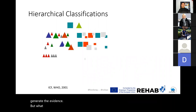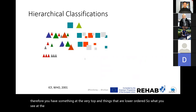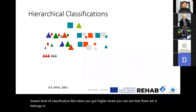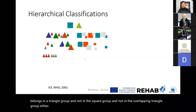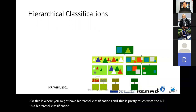What about if you then have to look at classifications based on hierarchies? At the very lowest level you have the red triangles and the gray triangles. When you go to higher levels you can see it belongs in the triangle group and not in the square group. This is where you have hierarchical classifications, and this is pretty much what the ICF is — a hierarchical classification rather than just having a whole set of parallel, horizontal-level classifications.